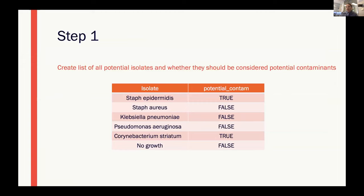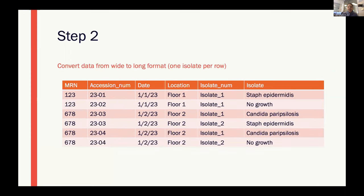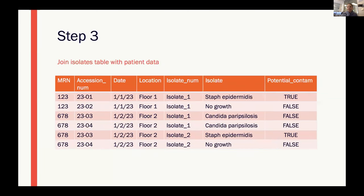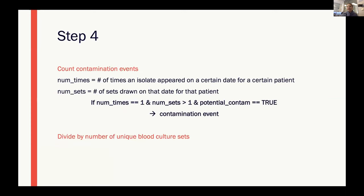We started by making a table containing all potential isolates and whether or not they should be considered potential contaminants — hundreds of rows in this table. Next, we converted the data from wide to long format so that each blood culture set and isolate combination had its own row, with one isolate per row. We then joined these two tables. Lastly, we count contamination events by looking at the number of patient-date combinations where an isolate appeared only once, the number of sets drawn for that patient on that date was greater than one, and the isolate is considered a potential contaminant. We divide this by the total number of unique blood culture sets for the relevant time period.